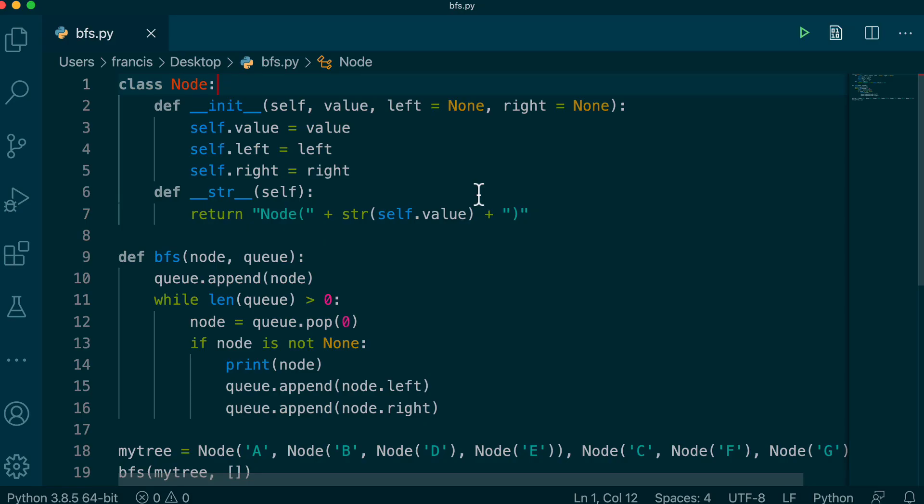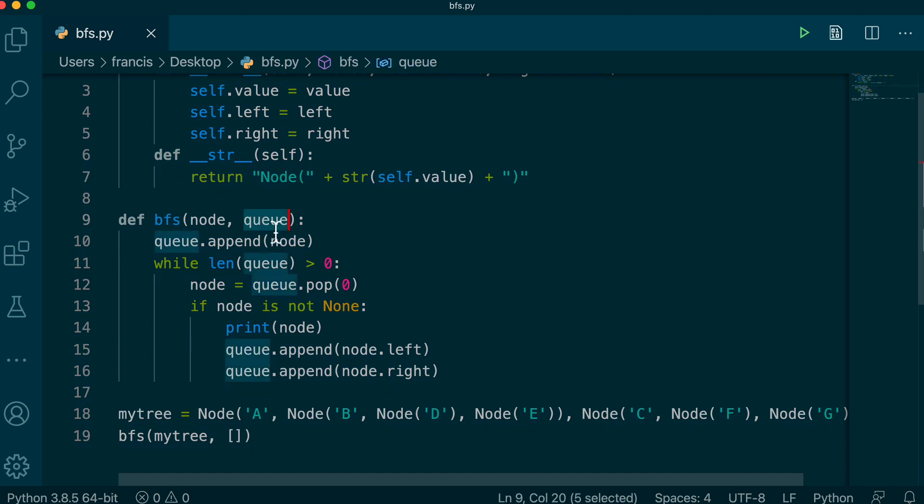So the code for a breadth-first search is really similar to a depth-first search, except the only difference is we use a queue instead of a stack. So we see here we have our queue to represent a queue, I'm using a Python list. So we append nodes onto the list, that would be the queue.add operation. So you can see here we have our loop, we pop the item that's at the front of the queue, we print it out and we add the children of that node onto the queue and that's exactly what was happening in the diagram that we just saw.